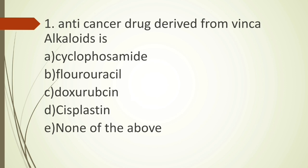Let's start MCQ for pharmacist competitive exams part three. First question: anti-cancer drug derived from vinca alkaloid is — option A cyclophosphamide, option B fluorouracil, option C doxorubicin, option D cisplatin, and option E none of the above. All these drugs are used as anti-cancer drugs but are not derived from vinca. The anti-cancer drugs derived from vinca alkaloid or Vinca rosea include vincristine and vinblastine, so the answer is option E, none of the above.